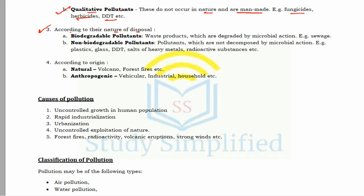A different criteria is according to the nature of disposal: biodegradable and non-biodegradable. Biodegradable pollutants are waste products such as organic household waste which may be degraded by microbial action, for example sewage. Non-biodegradable pollutants are not decomposed by microbial action and include plastics, glass, DDT, salts of heavy metals, and radioactive substances.